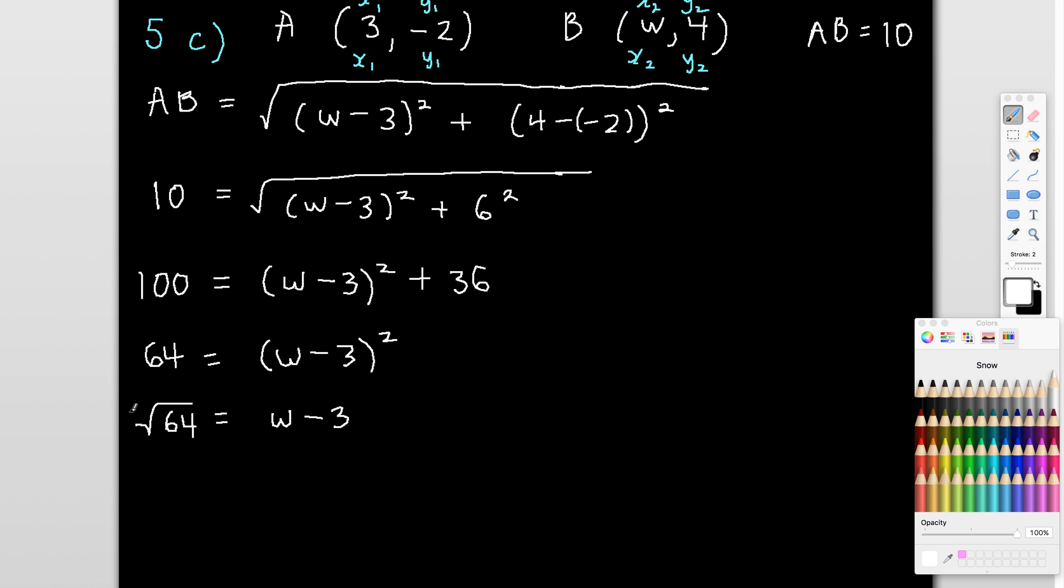So the square root of 64 has two possible answers. The first one is nice and obvious. So 8, 8 is the 64. So square root of 64 is 8. But you also need to recall that any number that is negative and squared will give you a positive result. So what this means is that the square root of 64 is actually equal to plus or minus or positive or negative 8. So positive or negative 8 is equal to w minus 3.